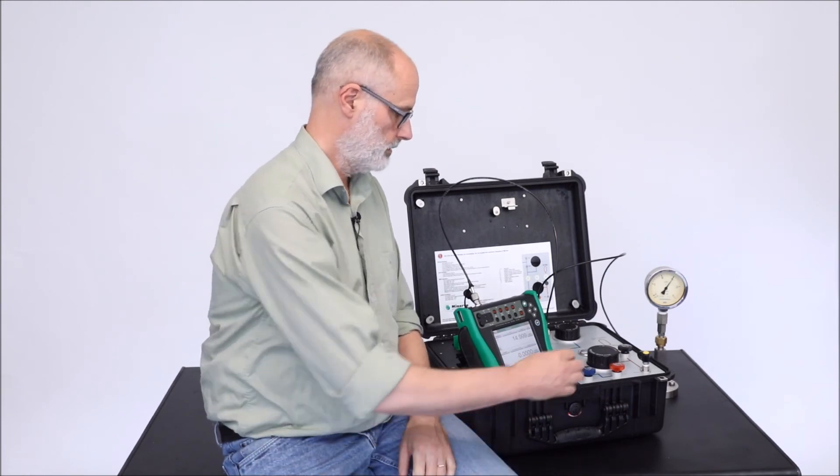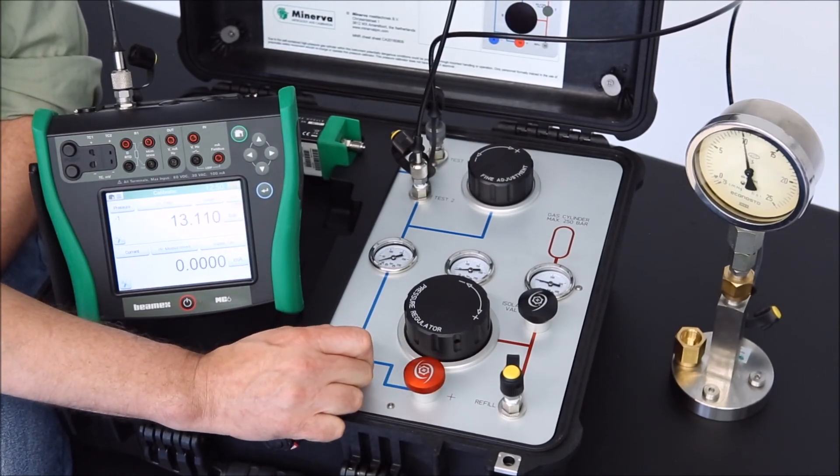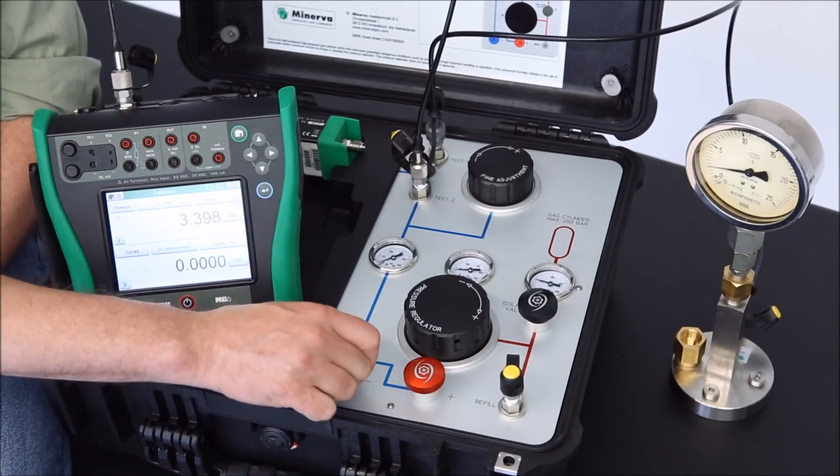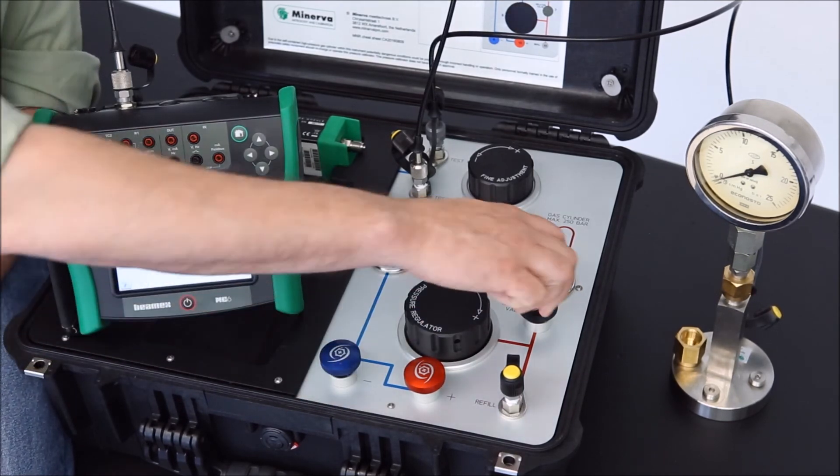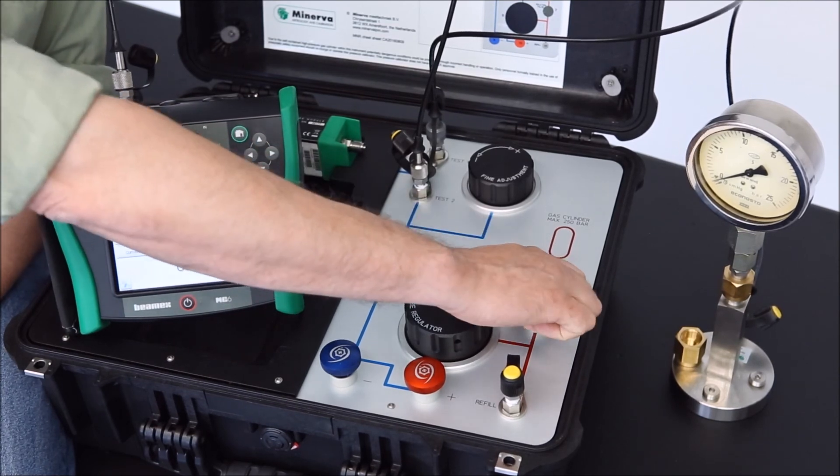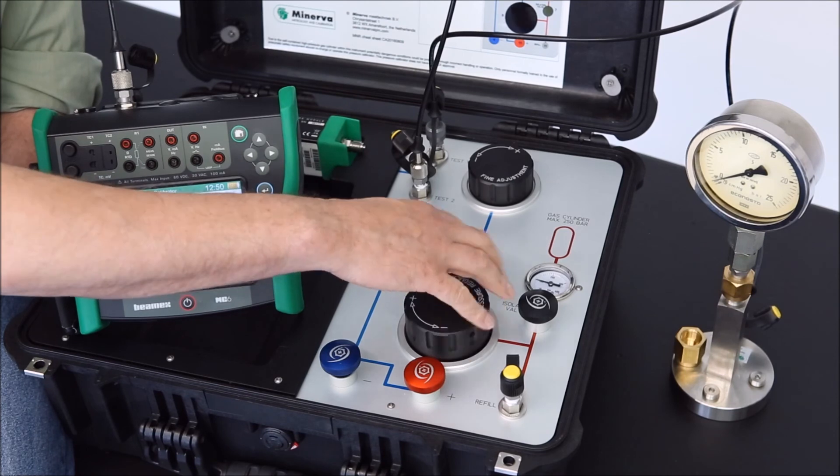So what I will do is make sure my up valve is closed. I open my vent valve, vent the system until we have zero pressure, close my isolation valve, and rotate my pressure regulator fully counterclockwise.